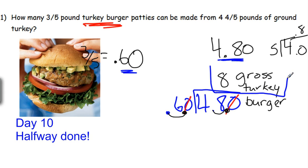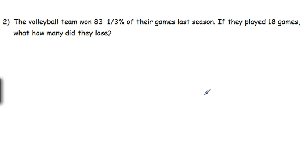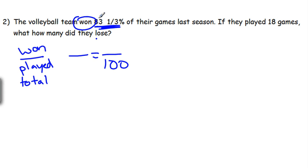Number two: The volleyball team won 83 and one-third percent of their games last season. If they played 18 games, how many did they lose? There's a couple ways we can do this. Let's stick with the percent it gives us and focus on what they won. Let's ignore this one-third percent, it probably won't make that much difference. Let's try it with just 83 percent.